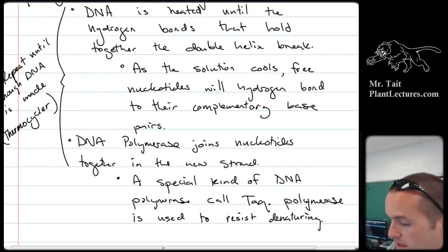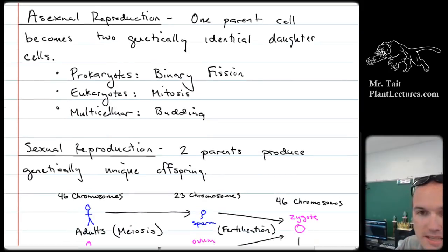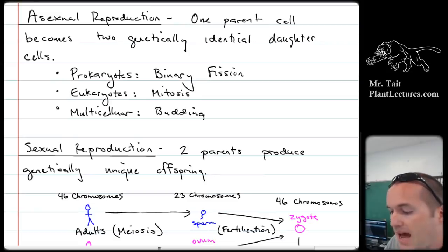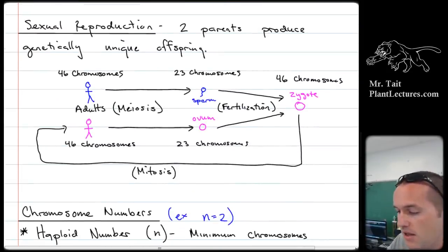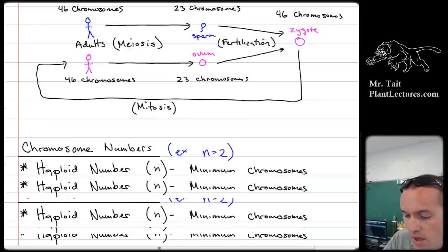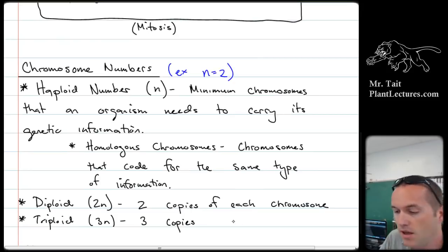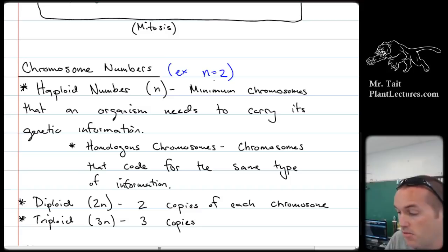Then we moved on to unit three. Unit three was on genetics. We talked about the different types of reproduction. Asexual reproduction is better as far as efficiency and speed go, but it's bad because it doesn't have any genetic diversity. Sexual reproduction is less efficient and not as fast, but it results in genetic variation, which turns out to be very important. In sexually reproducing species, we tend to have differences in chromosome number — prokaryotes are all N, while organisms that sexually reproduce can be 2N, 3N, 4N, or whatever.